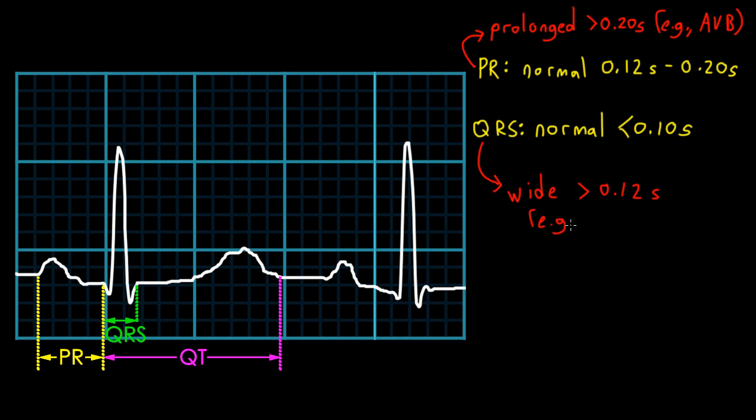When it's greater than 0.12 seconds or three small boxes, we call it wide. In a bundle branch block, one of the bundle branches of the His-Purkinje system is dysfunctional, typically due to structural heart disease. As a result, it takes longer for the impulse to make it through the complete ventricular myocardium, and we end up with a QRS complex that's wide.